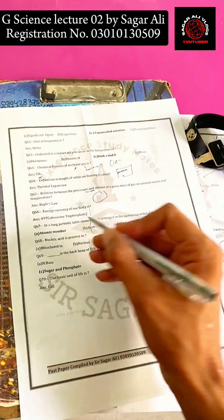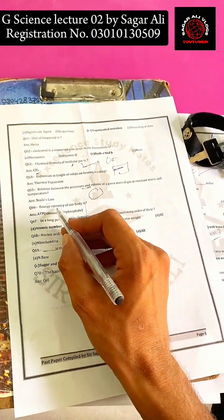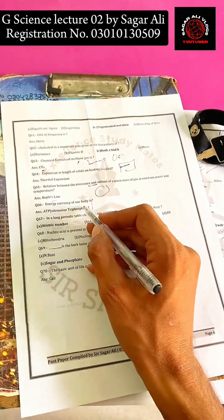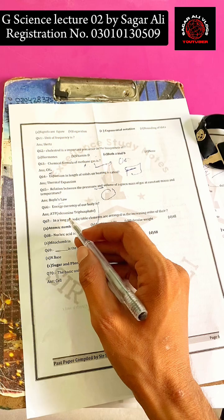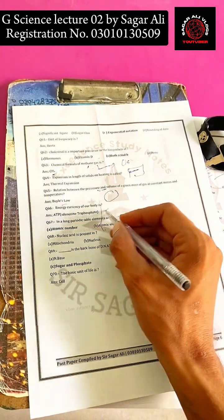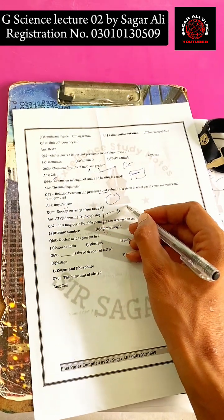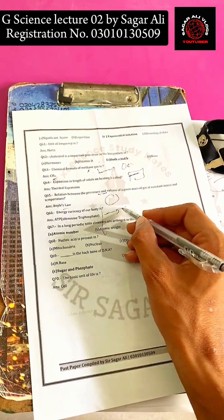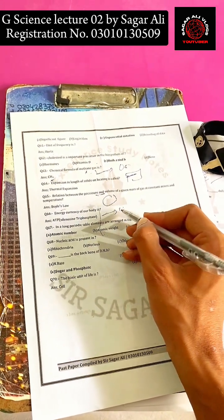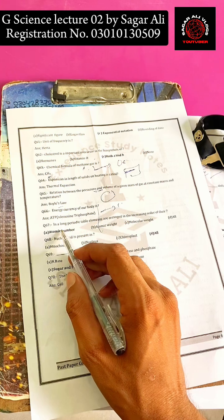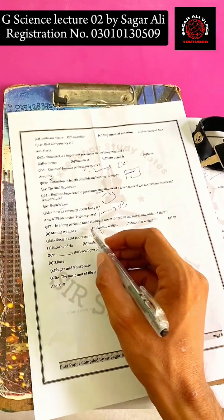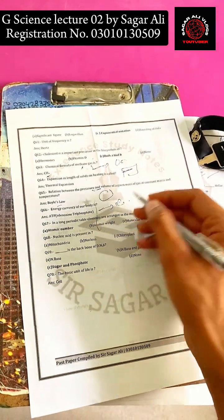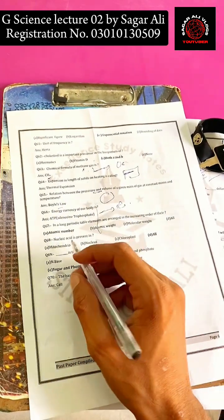The energy currency of our body is ATP - adenosine triphosphate. In biology, chapter 3-4 of the ninth class, we learn that ATP is prepared inside the cell in the mitochondria.